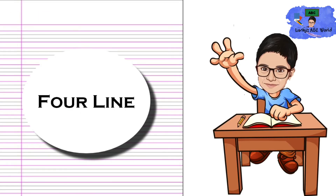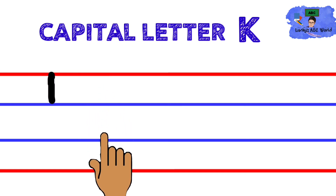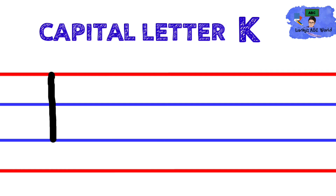Now let's see how to write capital letter K in a four-line book. To write K, first we draw a slanting line from the top red line to the third blue line. Then draw two slanting lines to the right side. First slanting line from the top red line to the second blue line.